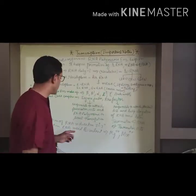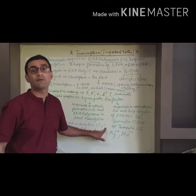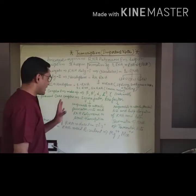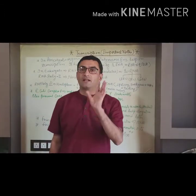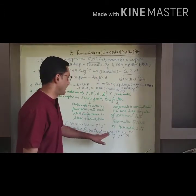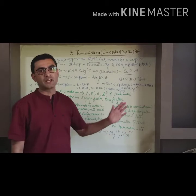RNA formation side is always 5 prime to 3 prime end. Remember this. And in RNA formation, two divalent ions help - that is manganese and magnesium ions.